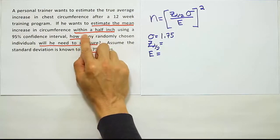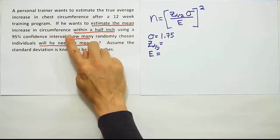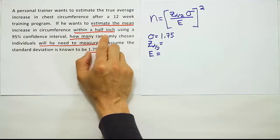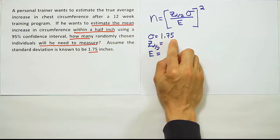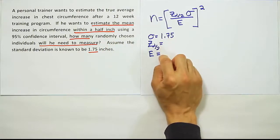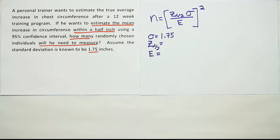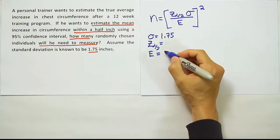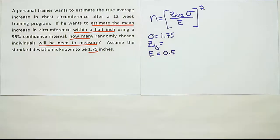They're using the phrase "within" as another way to state the margin of error. So a half inch - remember this was given in inches 1.75, so the error will be given in inches and a half inch is 0.5. You can use a fraction of one half as well.